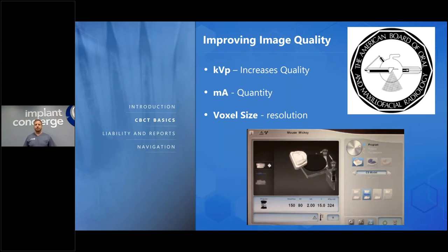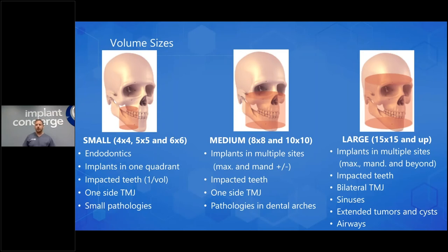When it comes to voxel size, this is another misconception. If a patient's coming in for endo treatment or single-arch implants, there's no reason to do a full head scan. The resolution is going to be a lot better if you do a smaller scan. Some machines can now get down to 80 microns versus a large scan at 15 by 15, and I don't know many machines that can get below 300 microns. So you're looking at a significant drop in image quality and resolution.